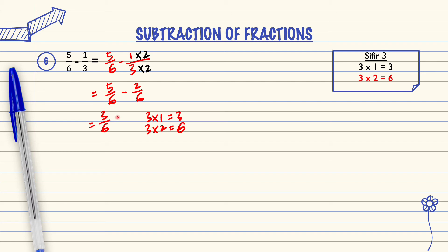So this means 3 over 6 will be divided using the 3 times table. The answer is 1 over 2.